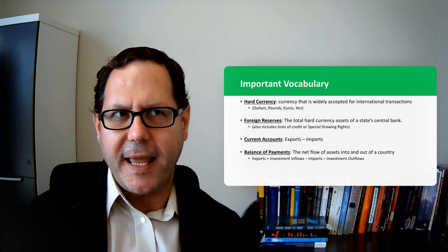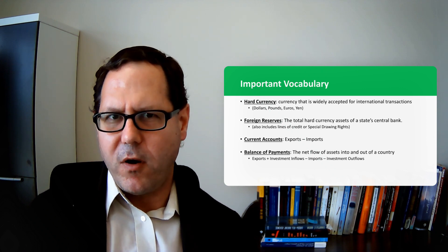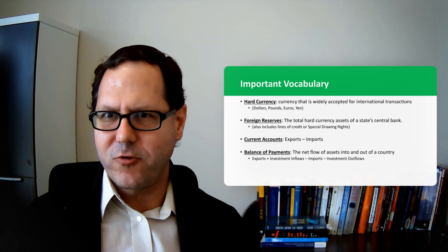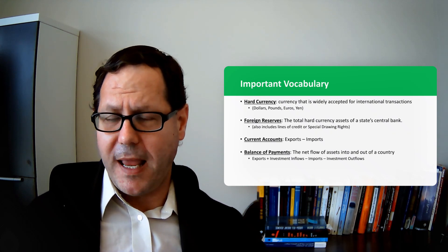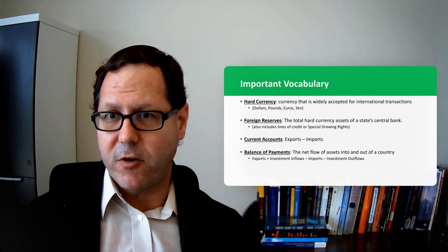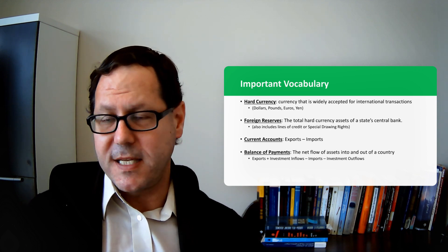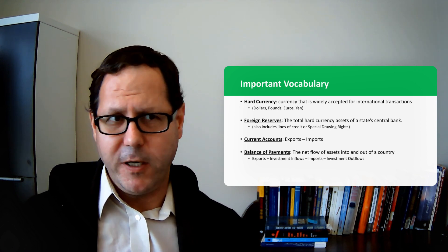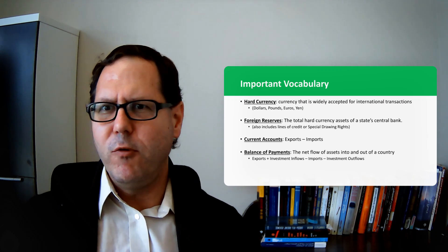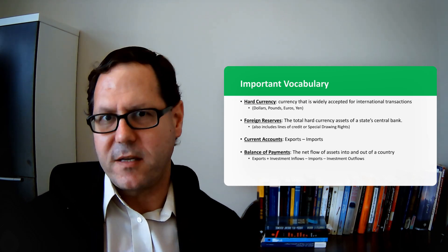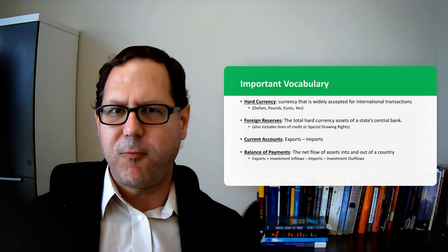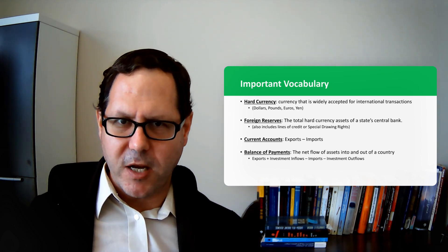Special drawing rights are essentially IOUs issued by the International Monetary Fund and used by central banks amongst each other. If a country doesn't have enough hard currency in their vaults, they can take special drawing rights — this IOU — and give it to another central bank, which will transfer hard currency in return. It's essentially a money-moving system among central banks created to provide greater liquidity, the ability to move money around within the system. So foreign reserves are the amount of hard currency and other assets your central bank has on hand.